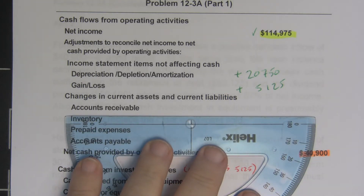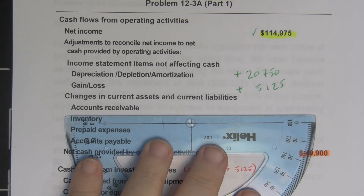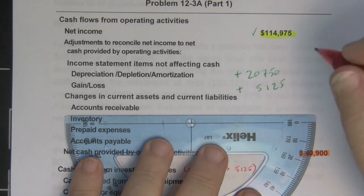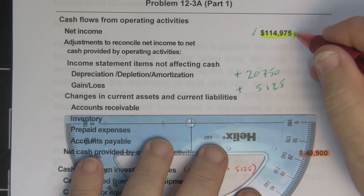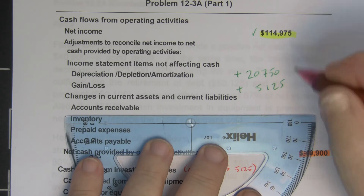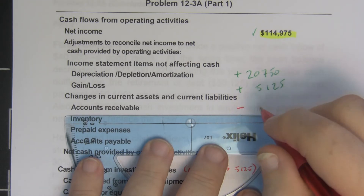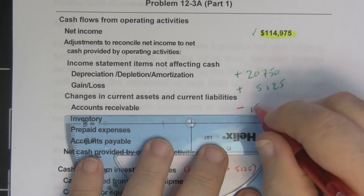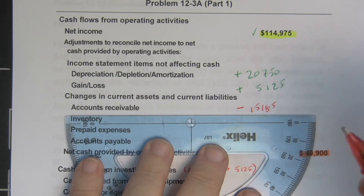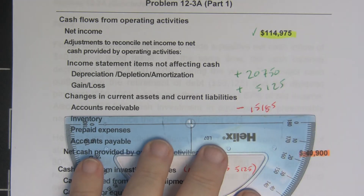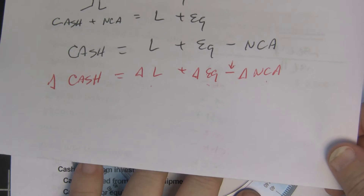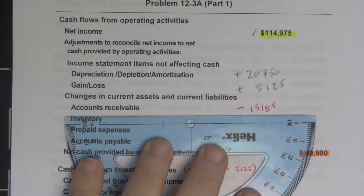Accounts receivable: our accounts receivable increased. So if our accounts receivable went up, it means more people owe us money. The credit we took for sales up here — we didn't get the cash. So that has to be a reduction of fifteen thousand one hundred and eighty-five dollars, because accounts receivable is a non-cash asset and it goes in the opposite direction of cash.